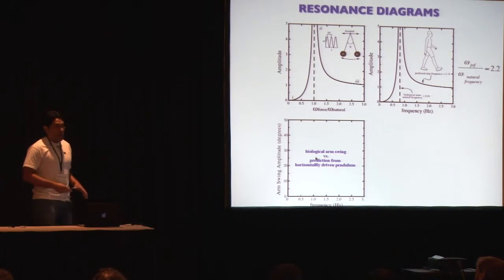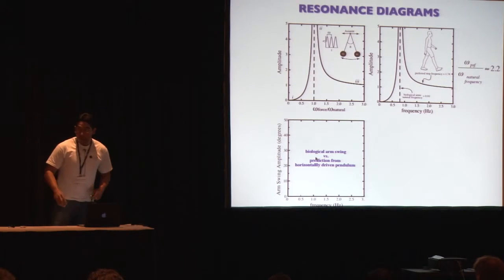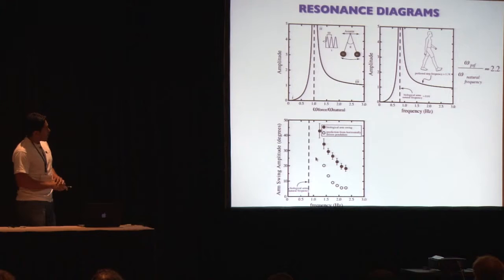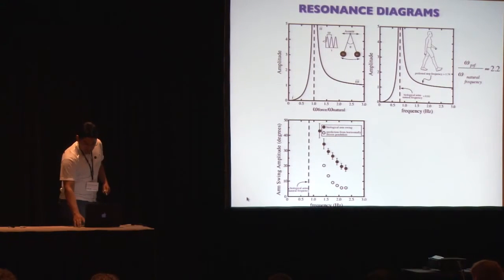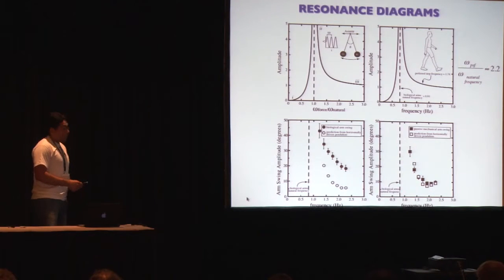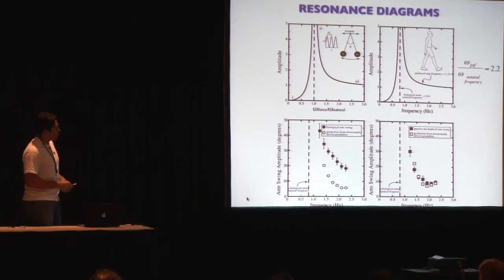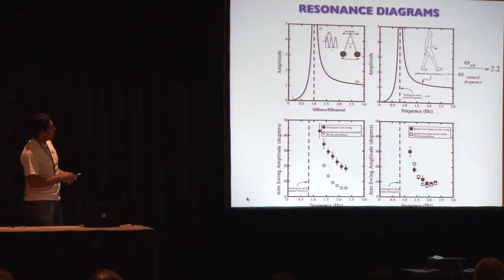Comparing our experimental biological arm swinging data to predictions from a horizontally driven pendulum model, the solid circles show experimental data and the model predictions, which underestimate the swinging amplitudes. When we compare predictions to our passive mechanical arm swing data, using parameters from the equations of motion, the predictions match well with the swinging amplitudes of the passive mechanical arms. Interestingly, as subjects walk at slower and slower step frequencies approaching the natural frequency of the biological arms, the swinging amplitudes become excited — similar to what you'd find in a resonance diagram.